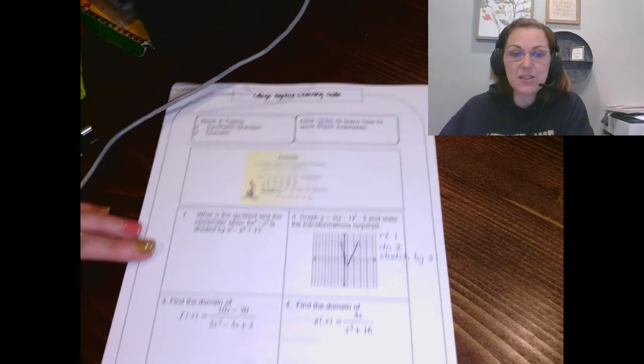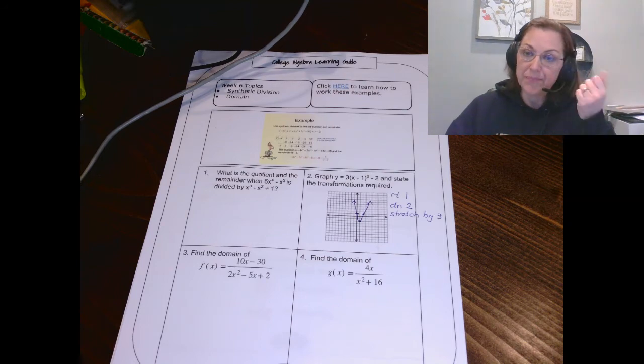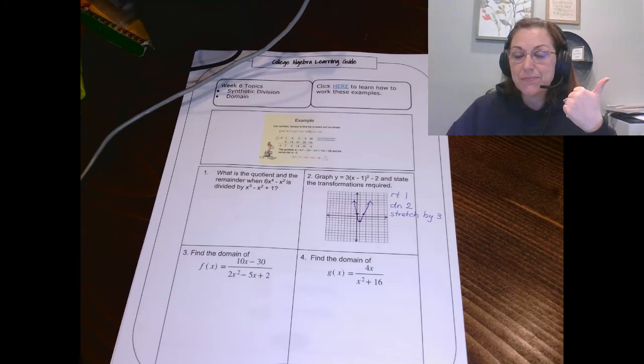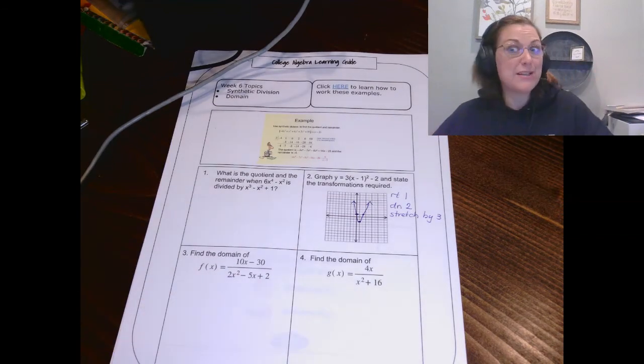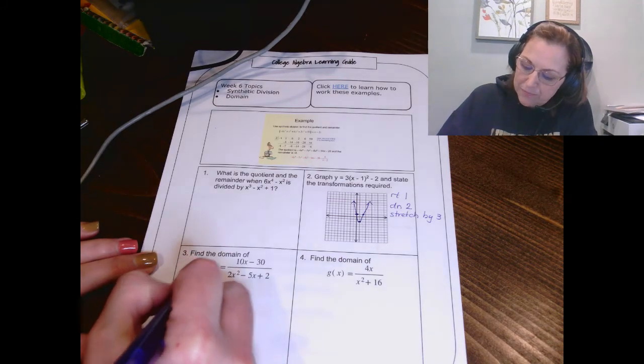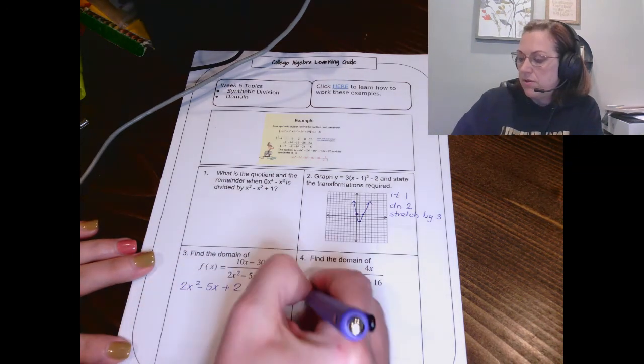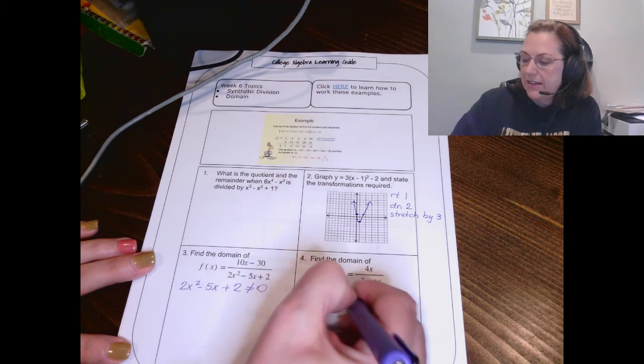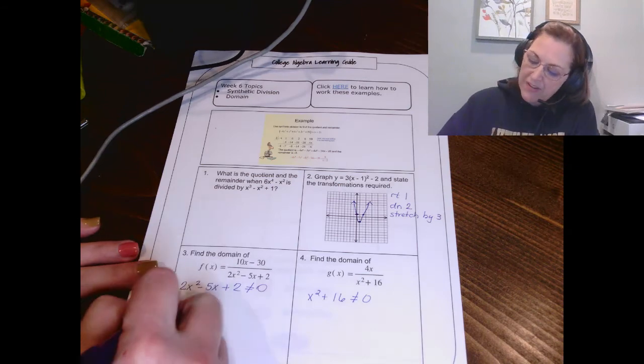We've got two problems left, and these are domain questions. There are two rules for domain. Square roots cannot be negative. And denominators cannot equal zero. I want you to see in problem three and four, we obviously are dealing with the second rule because we don't even have a square root in there. So let's take these denominators, and I'm going to say they cannot equal zero. The denominator cannot equal zero. Now the first one I'm going to try to factor. I'm going to factor into two parentheses.